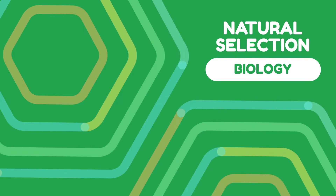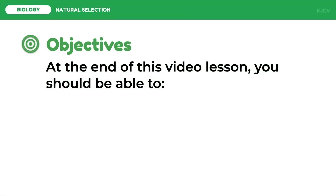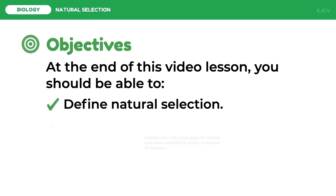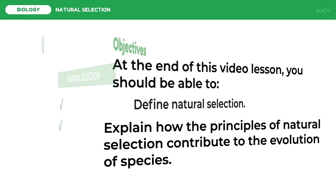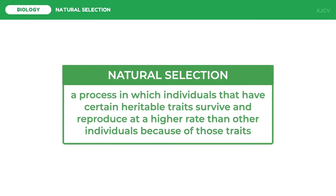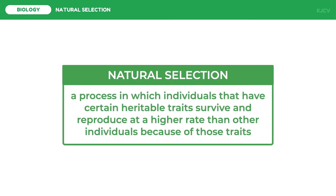In this lesson we are going to discuss natural selection. At the end of this video lesson you should be able to define natural selection and explain how the principles of natural selection contribute to the evolution of species. Natural selection is a process in which individuals that have certain heritable traits survive and reproduce at a higher rate than other individuals because of those traits. Natural selection is Charles Darwin's theory on the main driving mechanism of evolution.